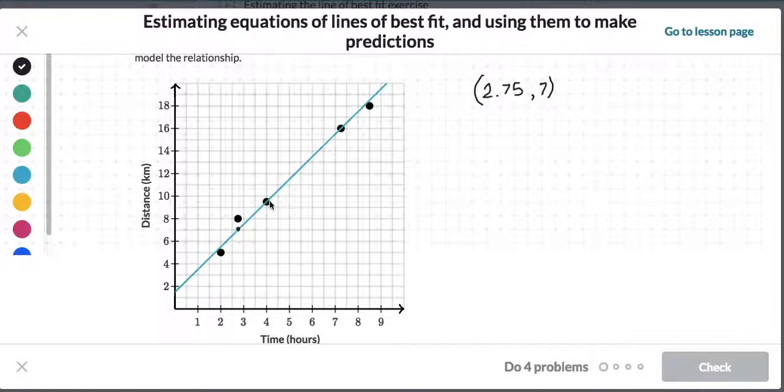And another point on the line, well we could actually choose one of the points we've actually been given. Look at that. Let's choose this point right here and this point that we've actually been given. I'm going to color it a different color so we can see it. So these are the two points we're choosing. This point we've actually been given is the point 4, 9.5. So we've got the point 4 and 9.5 as well.